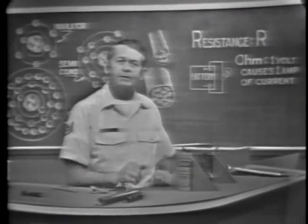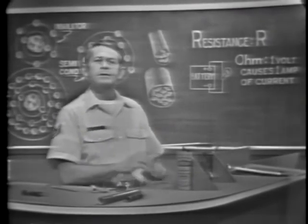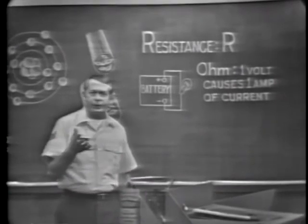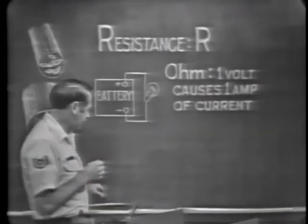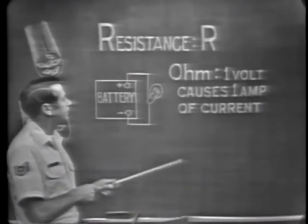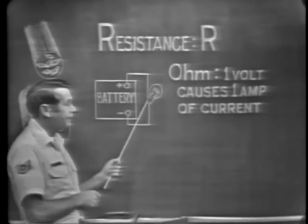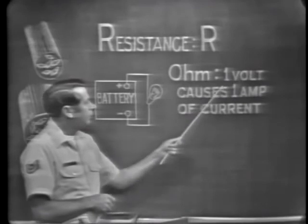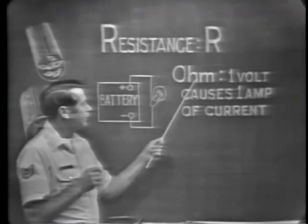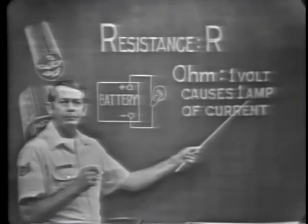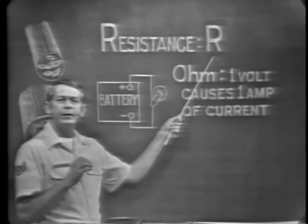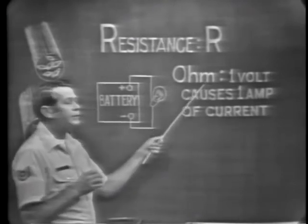Length, diameter, temperature coefficient, and the combination of materials used to make up these resistive devices all determine resistance. Since different circuits require various amounts of resistance, there's a need for measuring resistance. Resistance is measured in units called ohms — O-H-M. One ohm of resistance means that one volt will cause one ampere of current to flow. The symbol for resistance is the capital letter R, and it's measured in ohms.